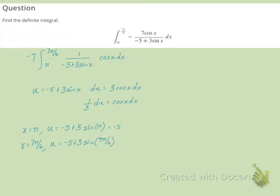7pi over 6 is in the third quadrant where sine is negative. So this is going to be negative 5 plus 3 times negative 1 half, giving us negative 5 minus 3 halves.